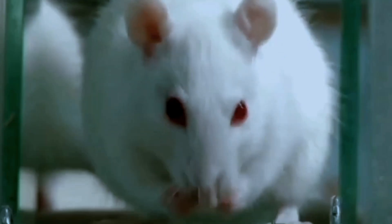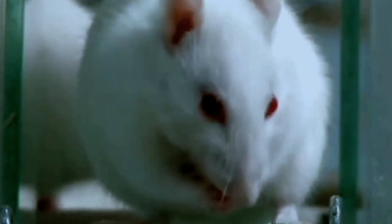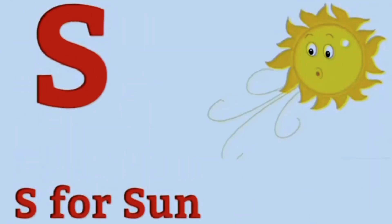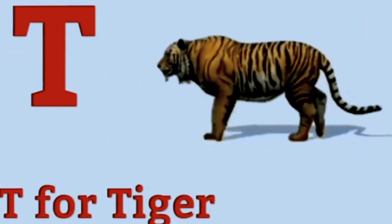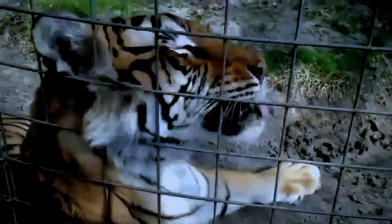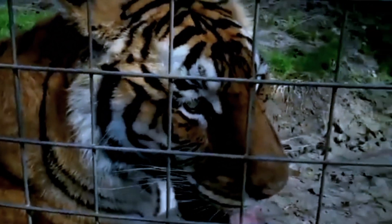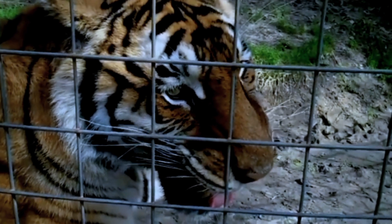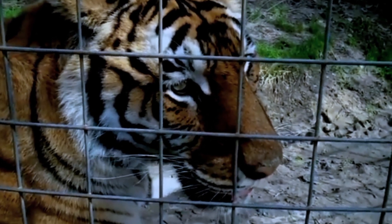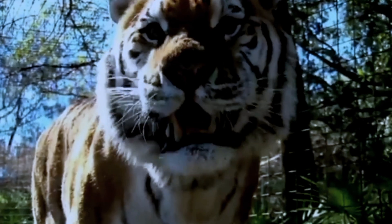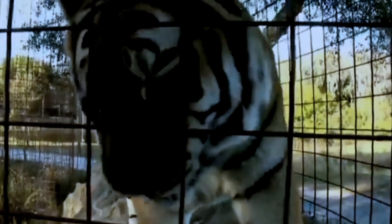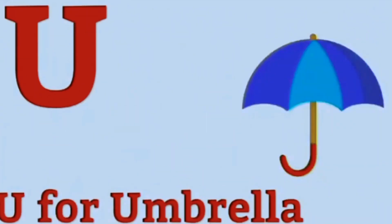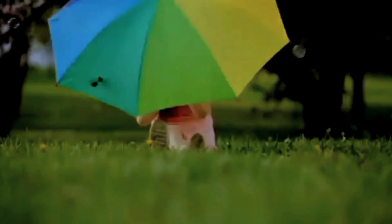R for Red. S for Sun. T for Tiger. U for Umbrella.